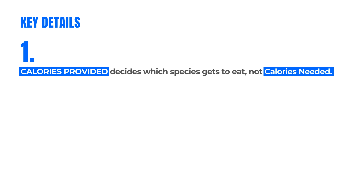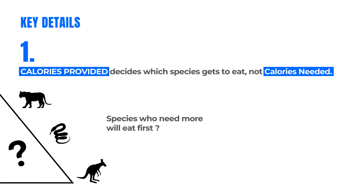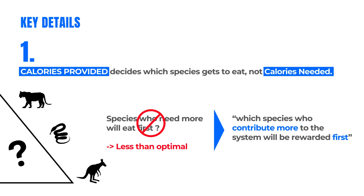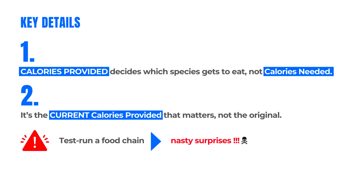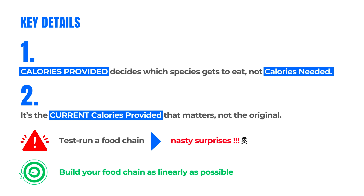There are key details to note. One: calories provided decides which species gets to eat, not calories needed. It might be tempting to think that species who need more will eat first, but that's not how it works — I interpret this as: the species who contribute more to the system will be rewarded first. Two: it's the current calories provided that matters, not the original. This has huge implications because it forces you to test run a food chain to know the results, and test running takes time. After test running, you might get nasty surprises — one species being one-upped by another, getting their only food source stolen and ending up starving. Consequently, you should build your food chain as linearly as possible — the less crisscrossing and overlapping, the better, because you can predict it more easily and test run it quicker.